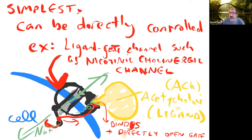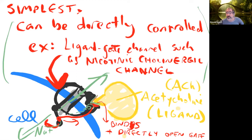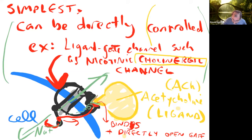These directly gated channels are important, but they're not the most common way to control channels using ligands — the most common way is much more indirect. 'Cholinergic' is just an adjective meaning related to acetylcholine. A nicotinic cholinergic receptor is a subtype of receptor for acetylcholine. We're also going to see muscarinic cholinergic receptors that bind acetylcholine but act differently.